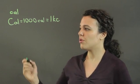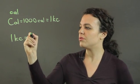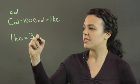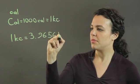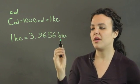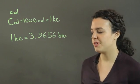So one kilocalorie is equal to 3.9656 British thermal units, and I write BTU for British thermal unit.